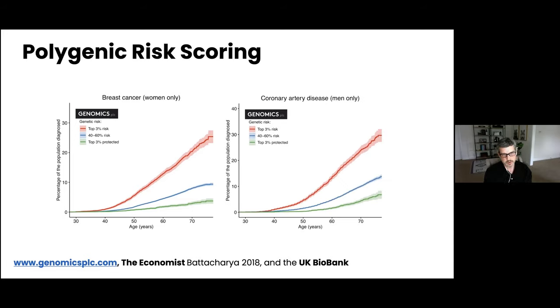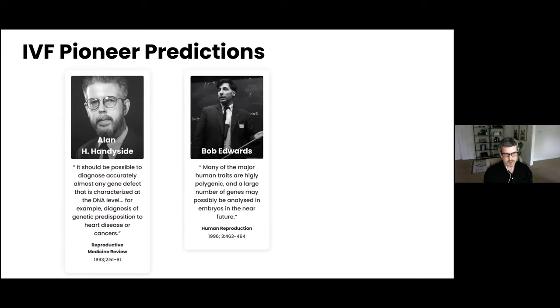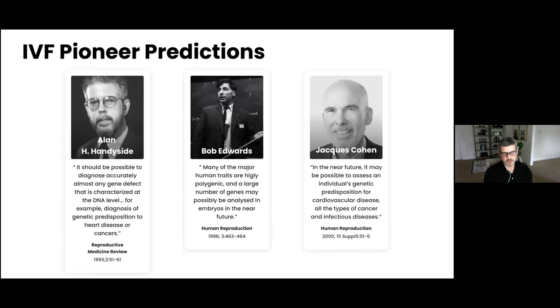Another example is coronary artery disease. And this isn't a new concept. Professor Handyside predicted the ability to do this in 1993, Bob Edwards in 1996, and Jacques Cohen in 2000. And Jacques actually predicted the use of microarray technology would make this possible.